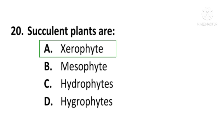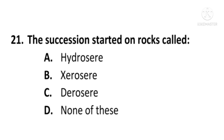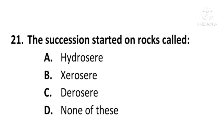Next question: The succession started on rocks is called — A) Hydrosere, B) Xerosere, C) Lithosere, or D) None of these. The correct option is C, Lithosere. The succession started on rocks is called lithosere; C is the correct option.